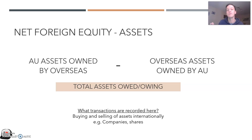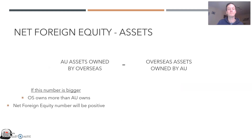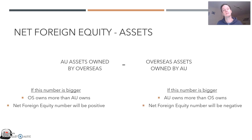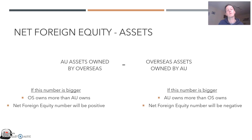If the first number is bigger — that is, overseas owns more than Australia owns overseas — the net foreign equity number will be positive. If the right-hand side number is bigger — meaning Australia owns more overseas assets than overseas owns of Australian assets — the net foreign equity number will be negative. Please feel free to watch this section over and over as it's a really tricky concept.